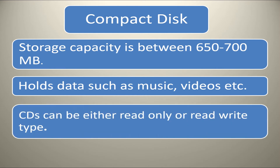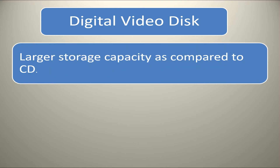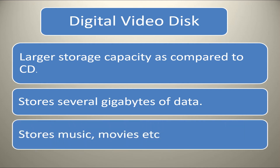CDs can be either read-only or read-write type. A digital video disk or a DVD is similar to a CD but has large storage capacity and enormous clarity. Depending upon the disk type, it can store several gigabytes of data. DVDs are primarily used to store music or movies and can be played back on your television or the computer too.